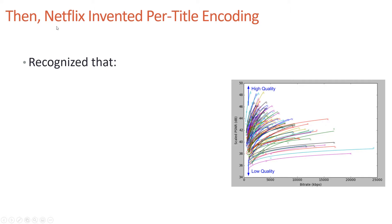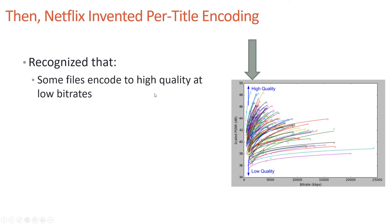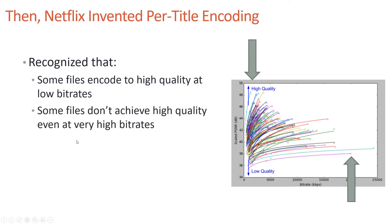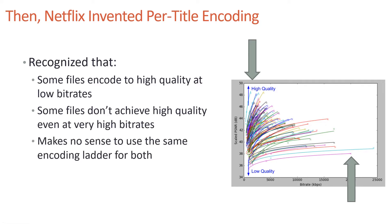In that blog post, Netflix recognized that some files encode to high quality at very low bitrates. Looking at a bitrate graph and a quality graph in PSNR, some files could achieve very high quality at well under 5 megabits per second, while some files don't achieve high quality even at very high bitrate — around 38 PSNR average at 20 megabits per second.